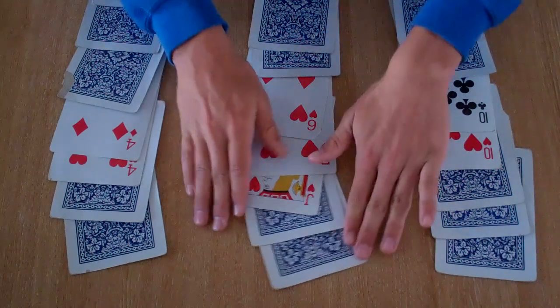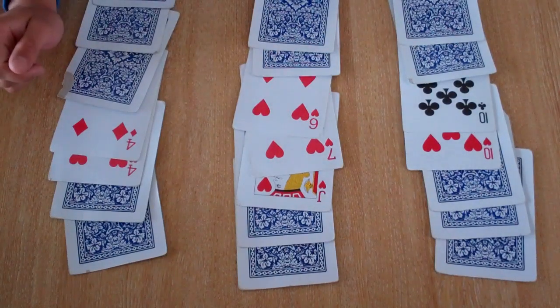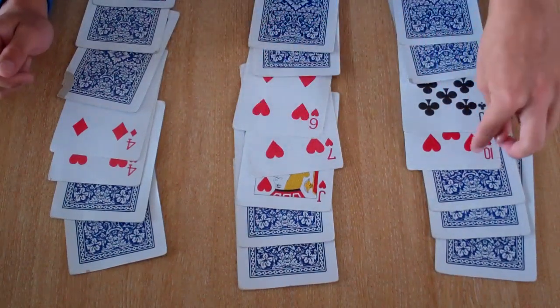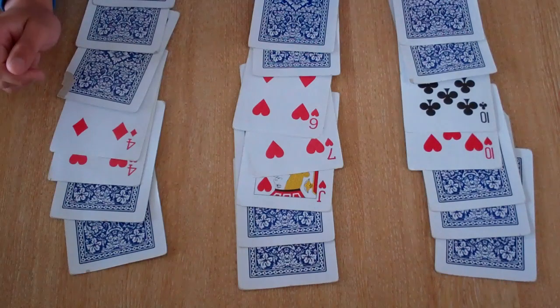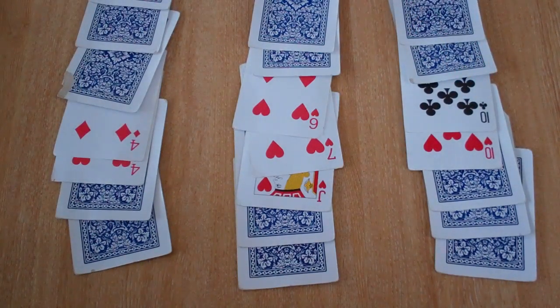So it could be any of these cards. It could be the third, fourth, fifth position in the second column. The fourth or the fifth position in the first column. Or the third or the fourth position in the third column.